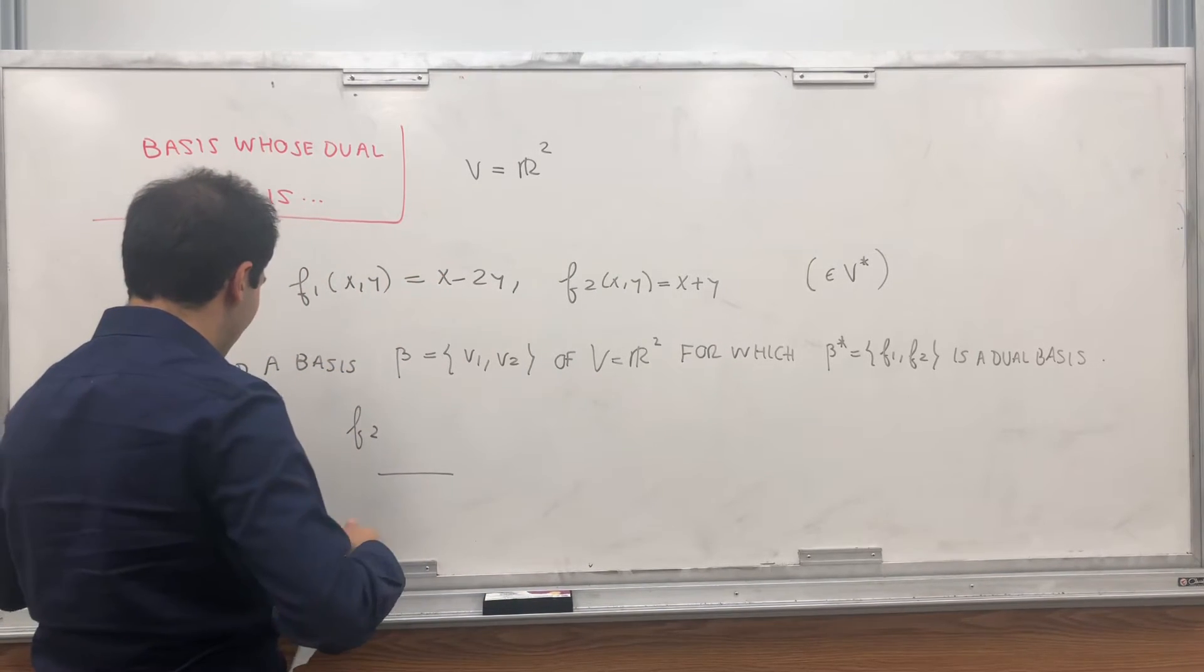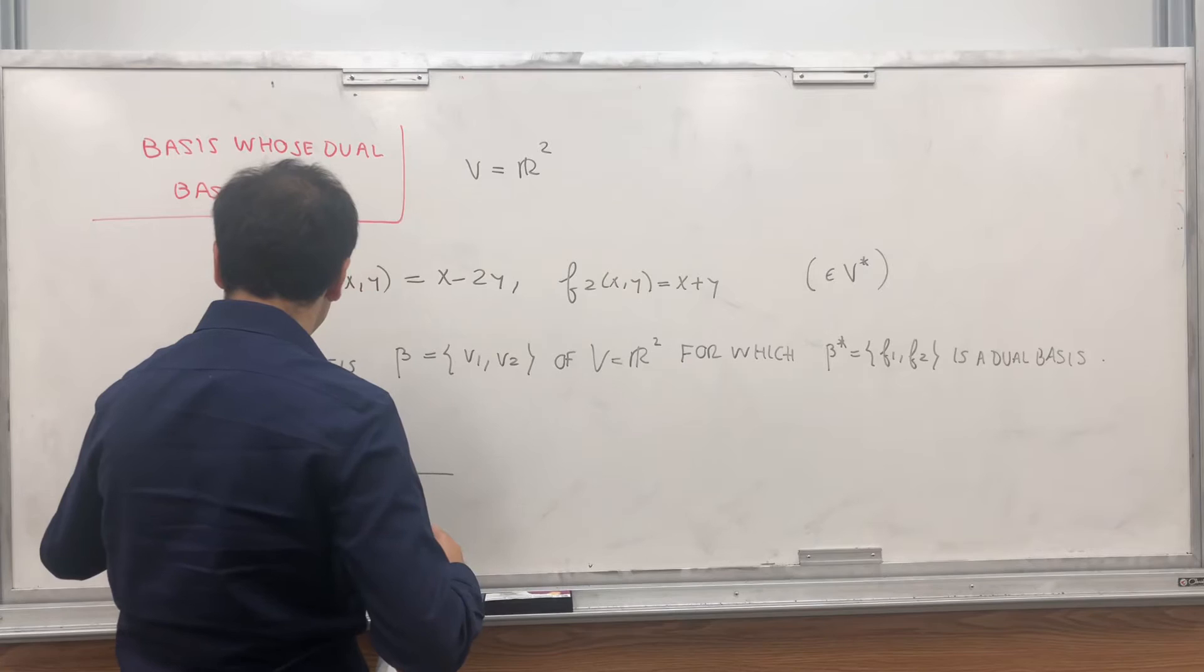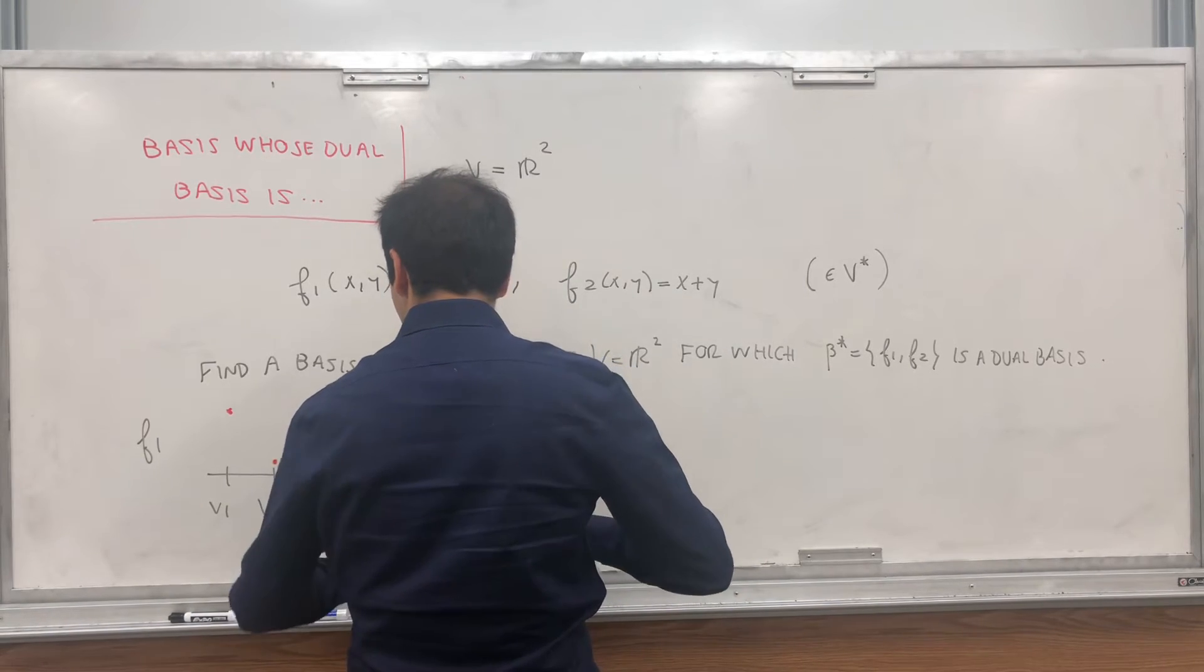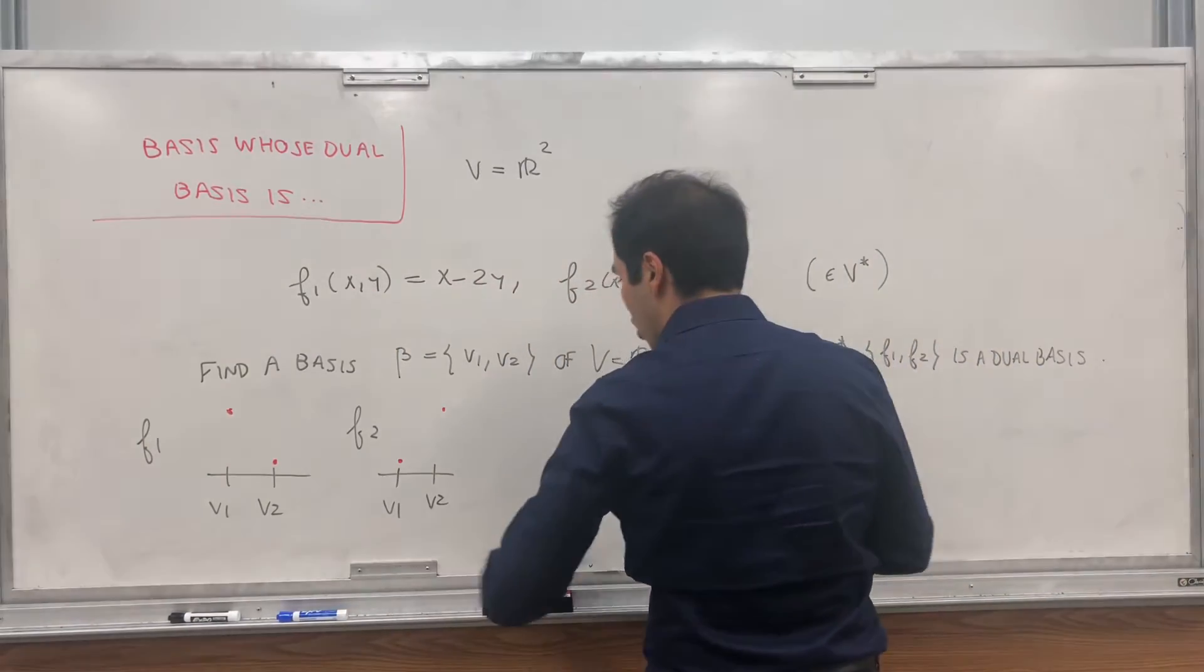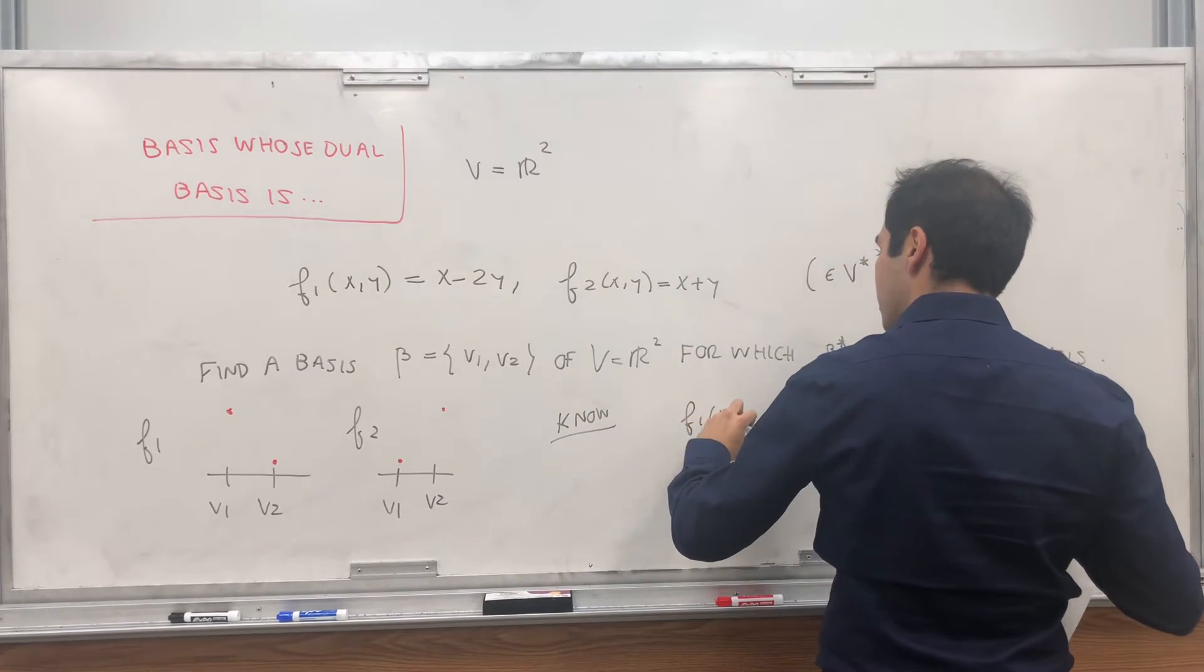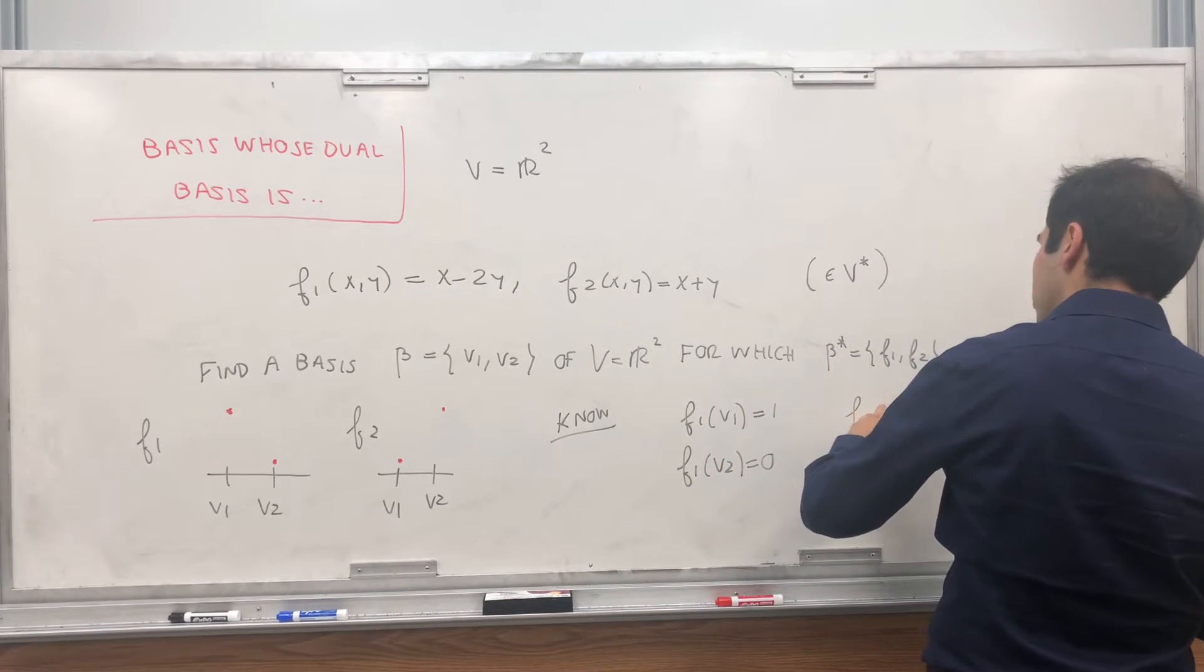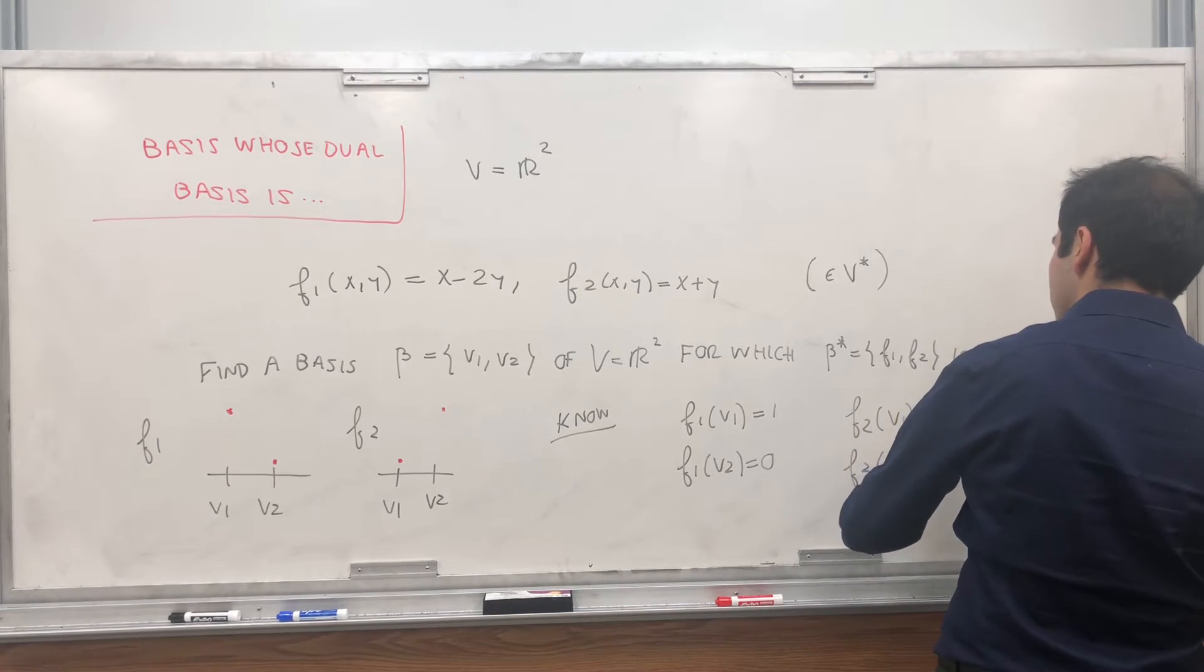So in other words, you want to find vectors V1 and V2 in R2 such that f1 is 1 here and 0 here, and f2 is the opposite. It's 0 on V1 but 1 on V2, so the point is, we know what f1 is. f1 at V1 equals 1, f1 at V2 equals 0, and f2 at V1 equals 0, and f2 at V2 equals 1.